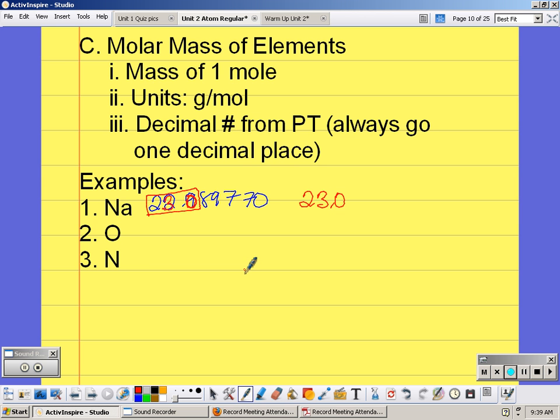For oxygen, on the periodic table, it is 15.9994. So one decimal place would be .9. Well that's followed by a 9, so the 9 would round to a 10, which would round to a 6. So it's 16.0.